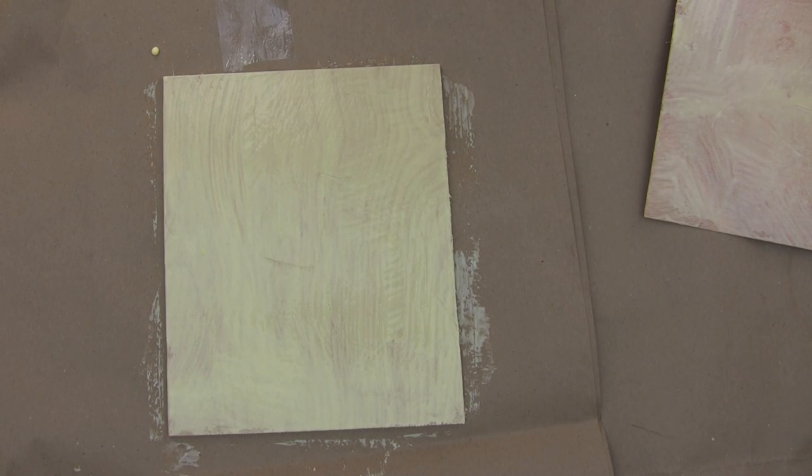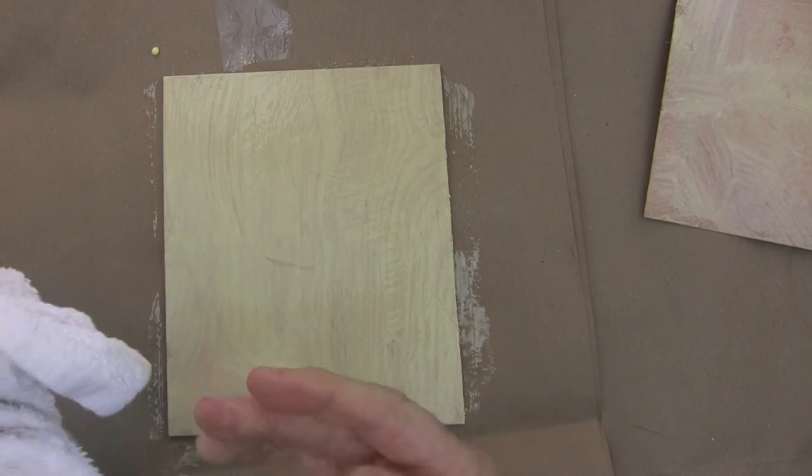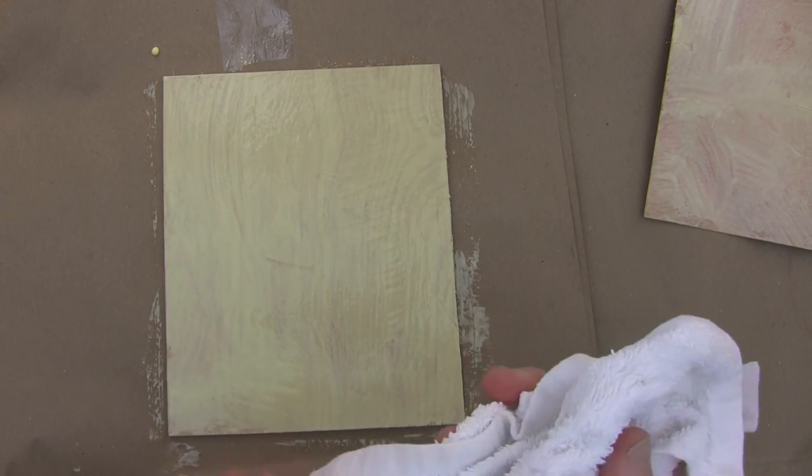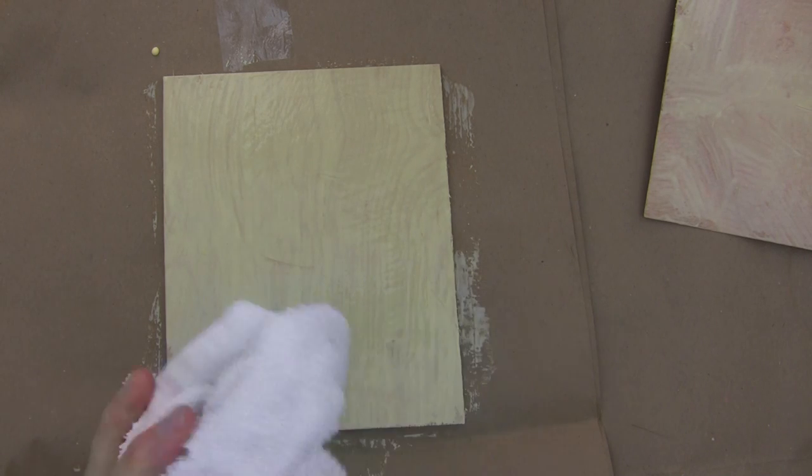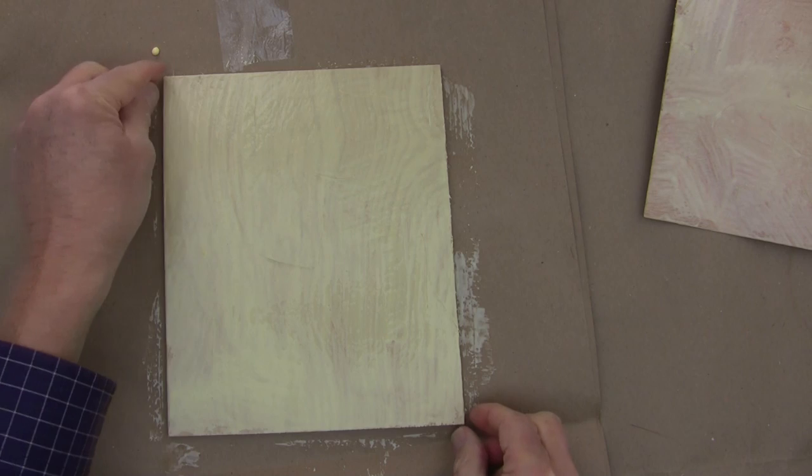So I'm done with that, set that off to the side. My fingers have gotten a little bit of glue on them. I don't want any of this glue to get on the surface of my veneer. So I'm going to prevent that right now with my water.